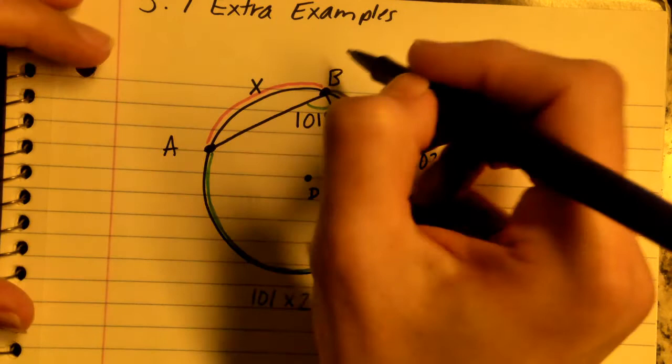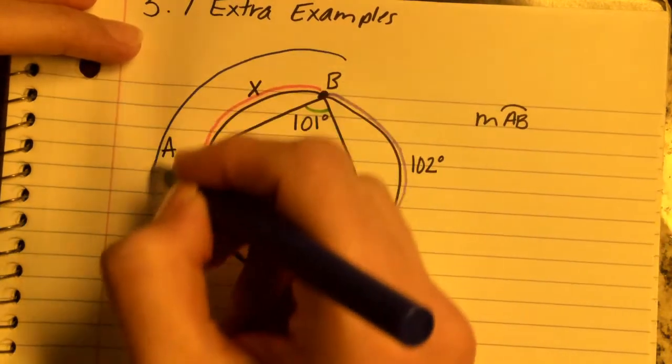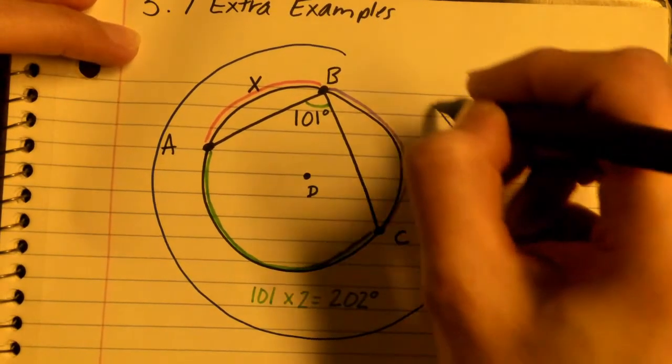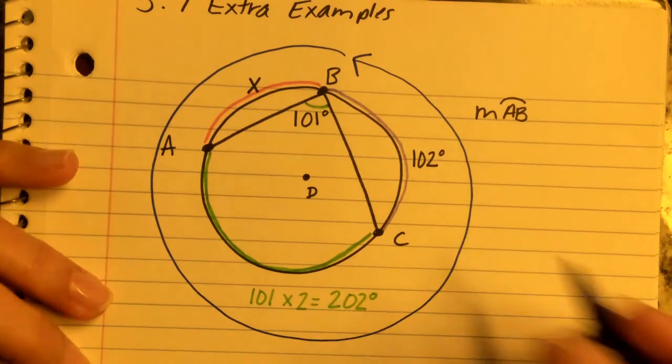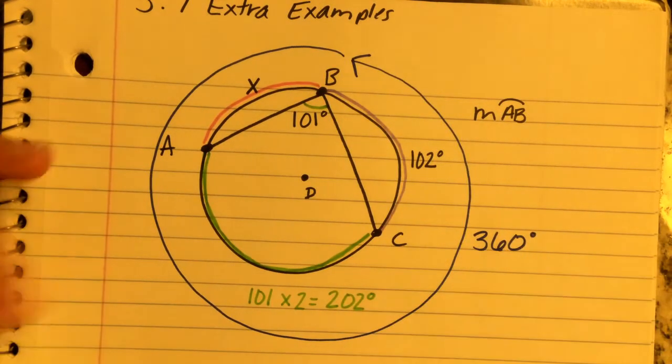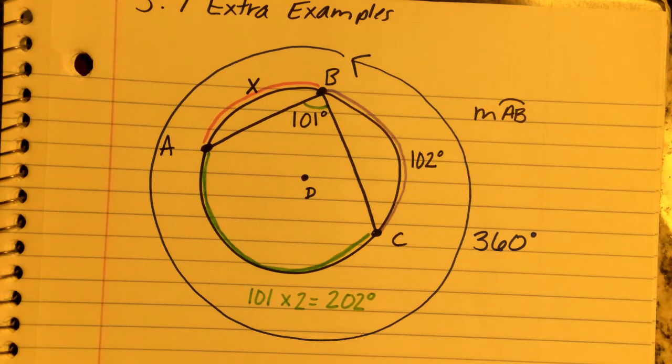What we need to remember is that when you have a circle all the way around, the measurement of all those arcs equals 360 degrees. So we can do our algebra.